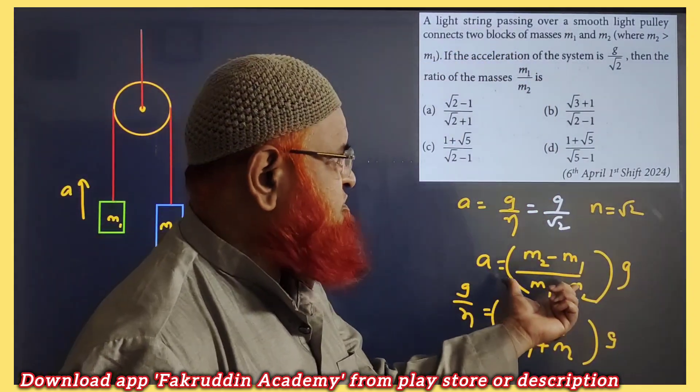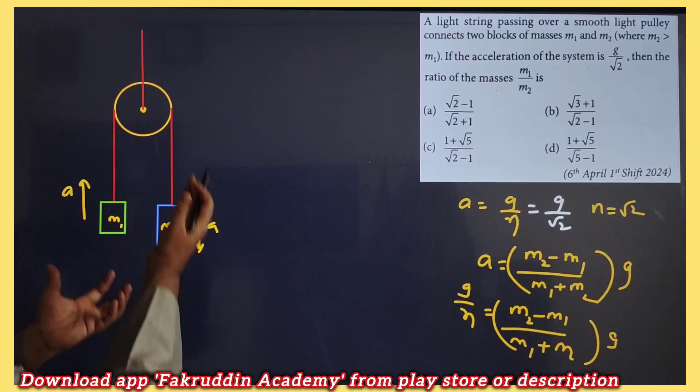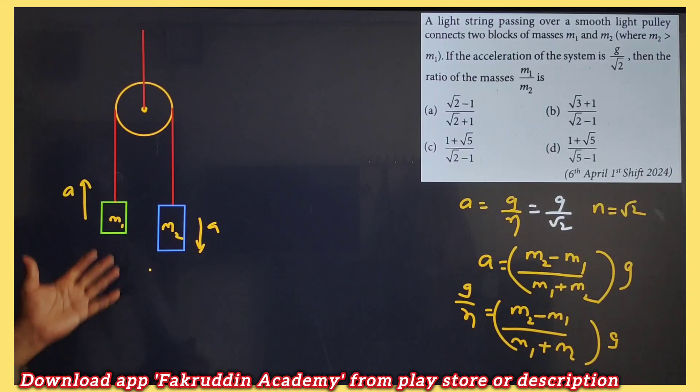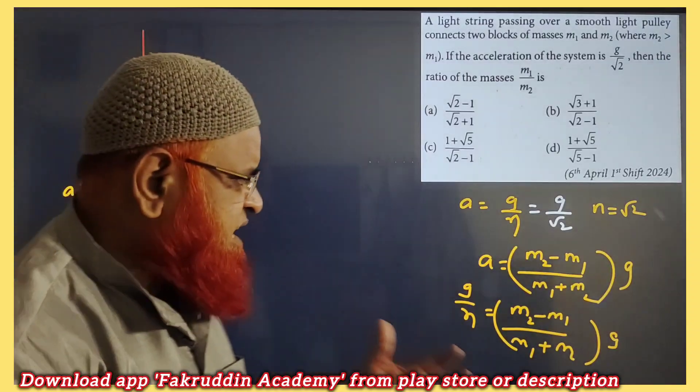So you know the acceleration formula for the case of this type of system. There is a pulley and block system. One is going down, one is moving up. m2 is going down, m1 is moving up. So how can we create short tricks?